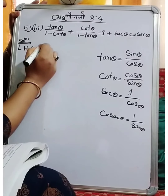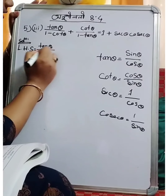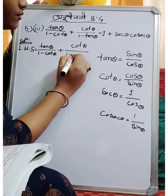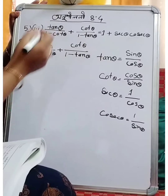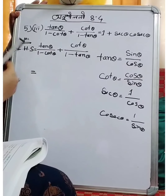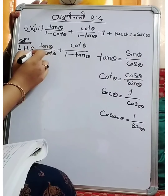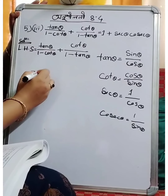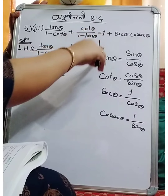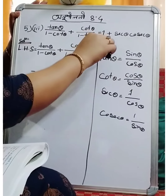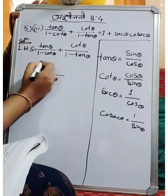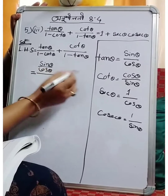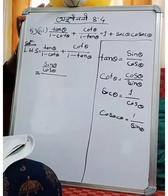What is on the 11th side? 10 theta by 1 minus 4 theta plus 4 theta by 1 minus 10 theta. What is on the 11th side? 10 theta by 1 minus 4 theta plus 4 theta by 1 minus 10 theta. What is our work here? 10 theta means sin theta by cos theta — why did we take it? 10 theta means sin theta by cos theta.